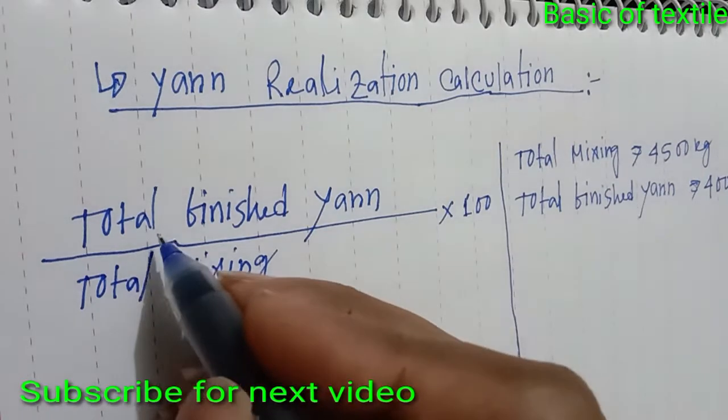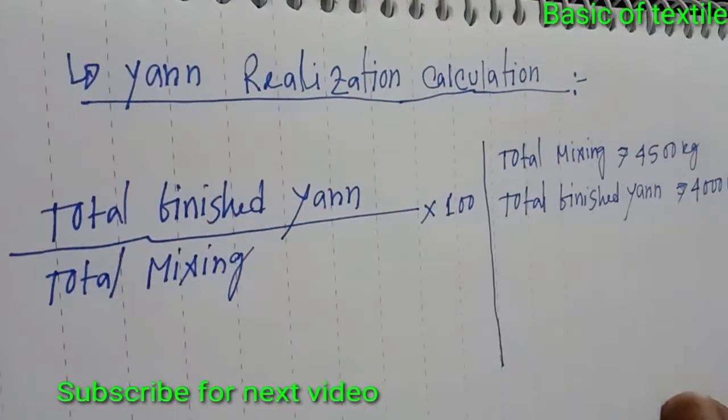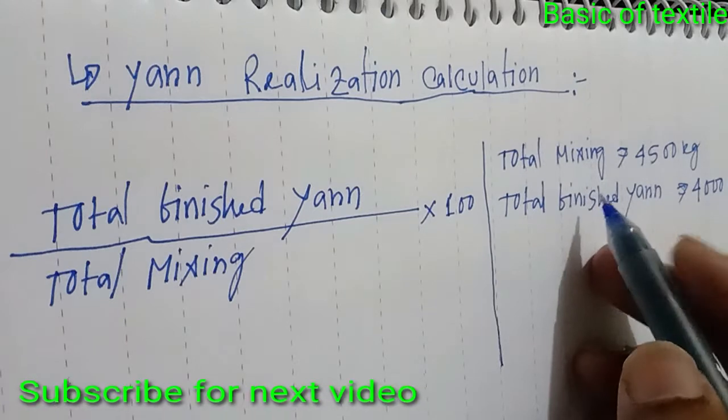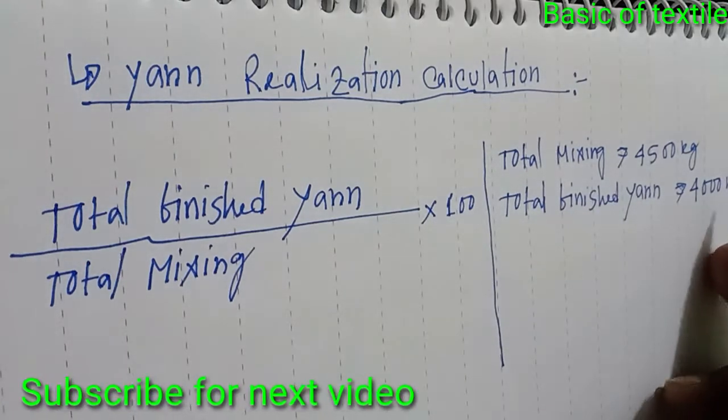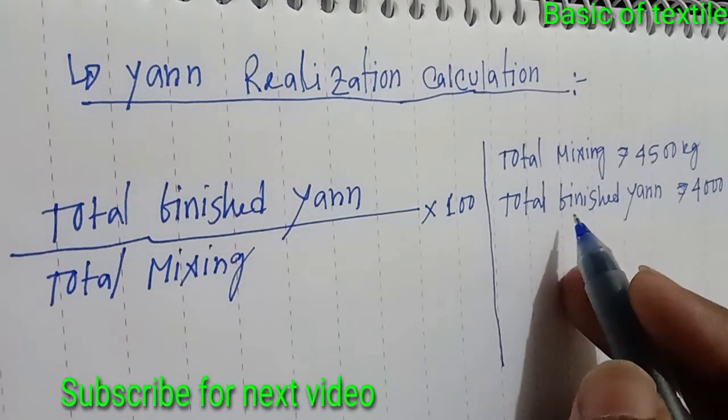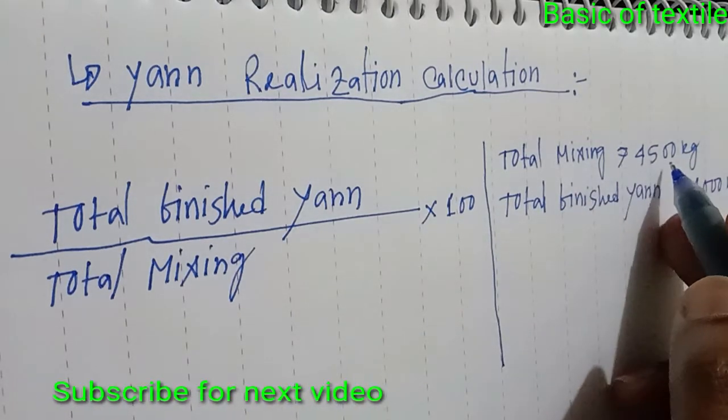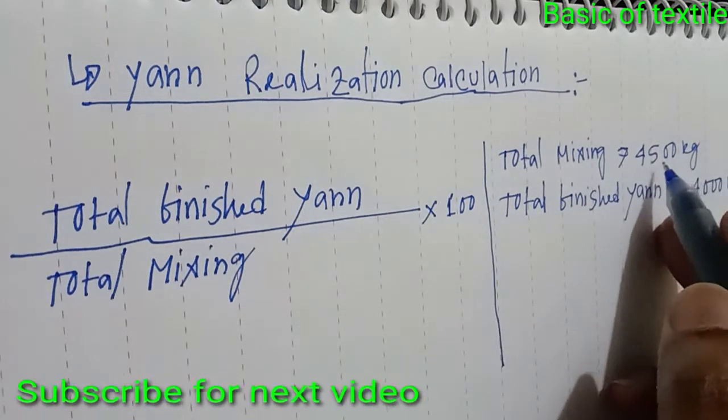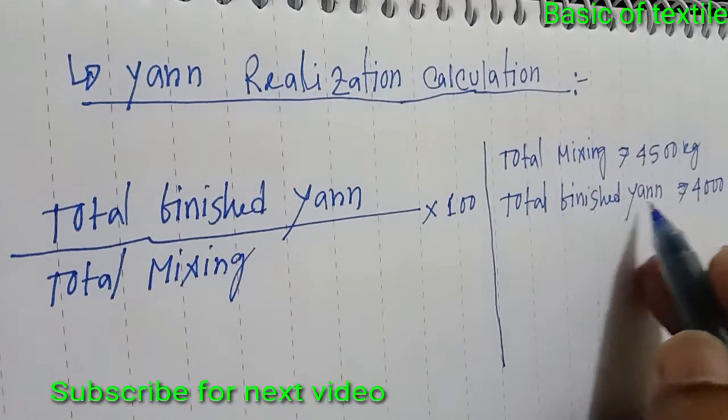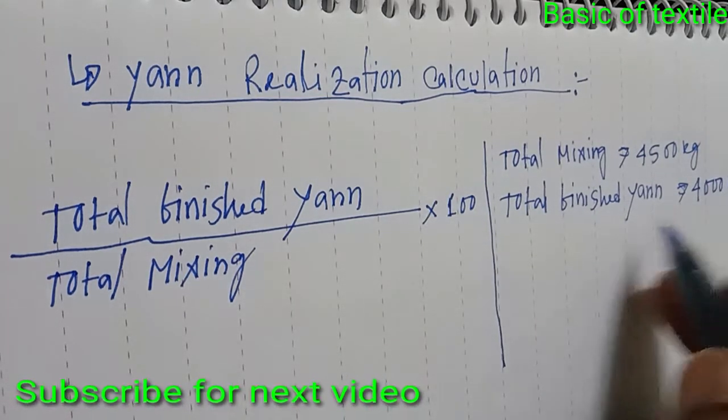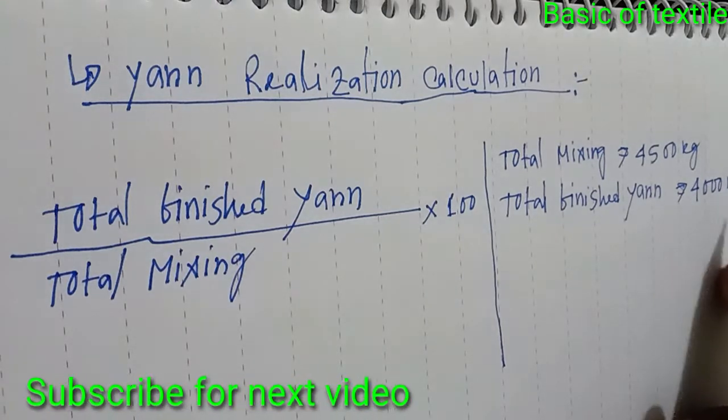Total finished yarn is 4000 kg - that's the output. The input is 4500 kg.